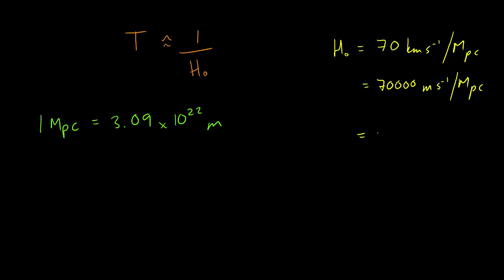We know that 1 megaparsec is equal to 3.09 times 10 to the power of 22 metres. So in SI units, the Hubble constant will be 2.27 times 10 to the power of negative 18 seconds to the power of negative 1.